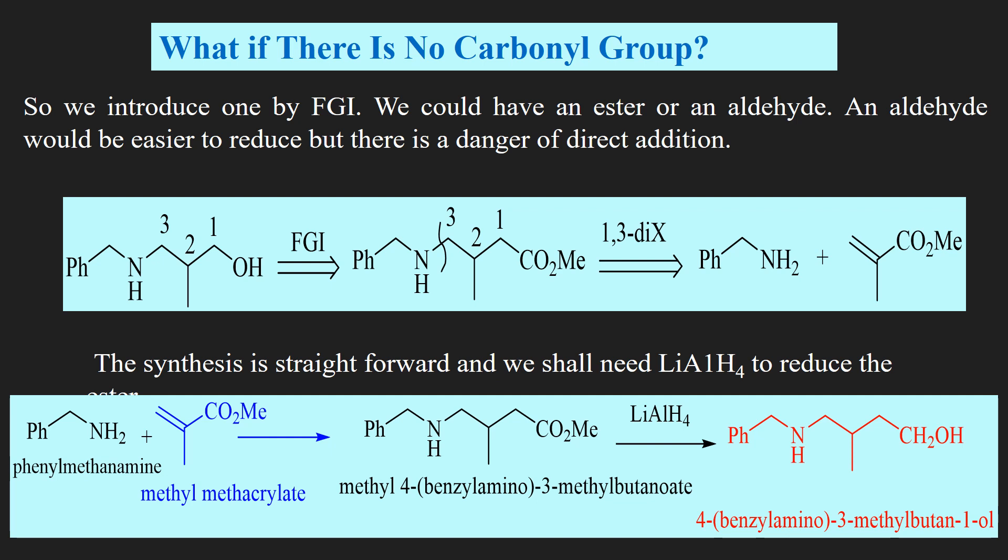What if there is no carbonyl group? The given amino alcohol has a 1,3-di-X relationship but no carbonyl group, so we introduce one by FGI. We could have an ester or an aldehyde. An aldehyde would be easier to reduce but there is a danger of direct addition, so we choose an ester. The synthesis is very straightforward, and we shall need lithium aluminum hydride to reduce the ester. Phenylmethanamine reacts with methyl methacrylate, and after reduction it gives the target molecule.